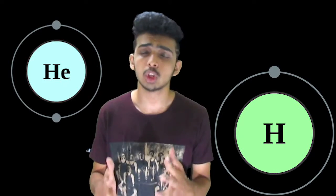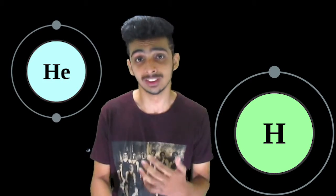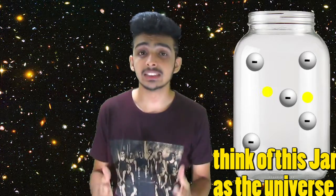After a few minutes, atoms of light elements came into existence due to nucleosynthesis. Our universe was so hot back then that the atoms of these elements were in an ionized state, so our universe was a hot plasma of these nuclei and free electrons. The density of free electrons in the universe was very high.